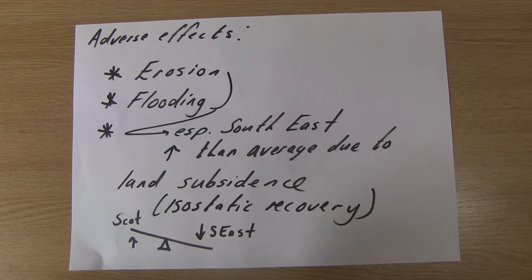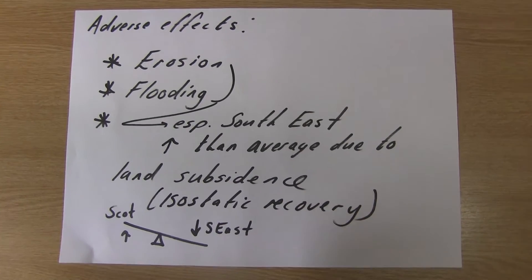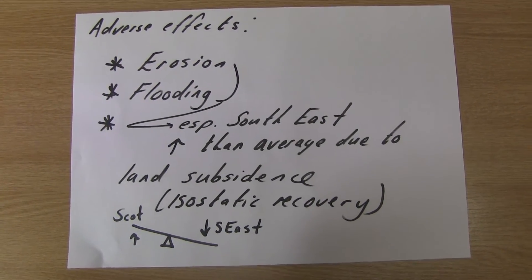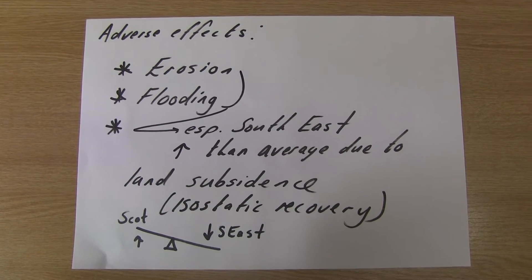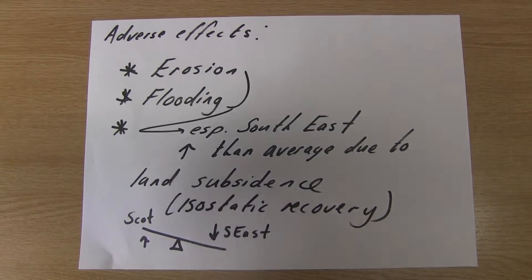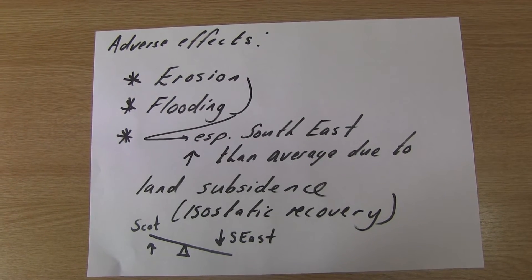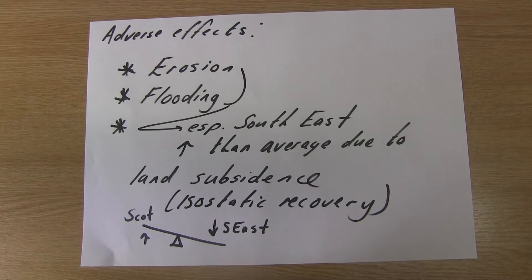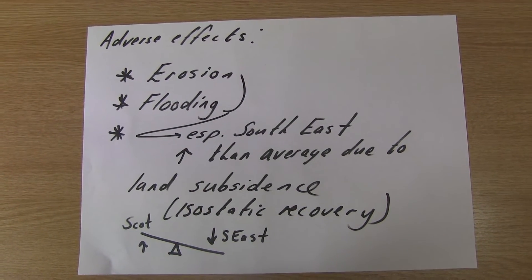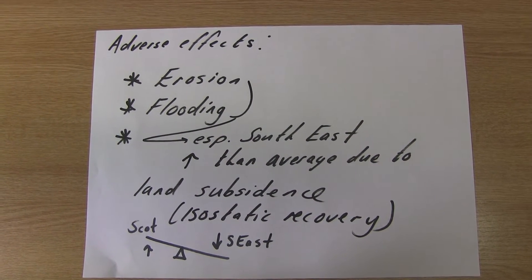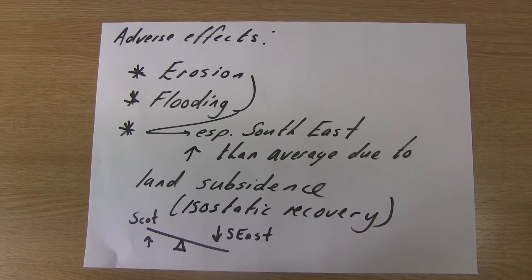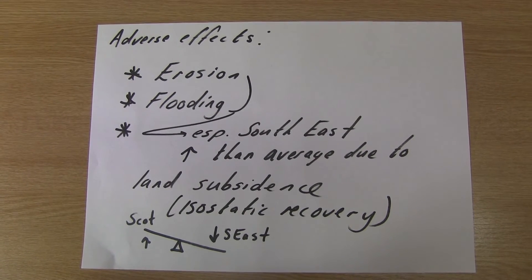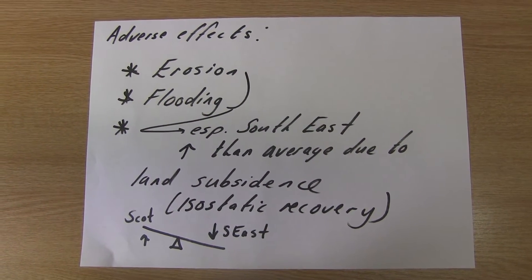There are many adverse effects of sea level rising. The first is erosion — along those high energy coastlines erosion will become a social, economic and political problem for councils and governments. Flooding is also going to be an issue, especially in the southeast. The land there is very flat with a lot of coast, and they're still suffering from isostatic recovery — the land in the southeast is still subsiding as Scotland springs up from the weight of ice during the last ice age. So not only is sea level rising, the land is also sinking closer to sea level.